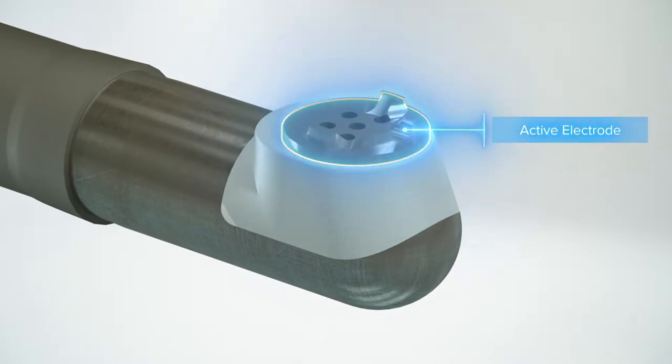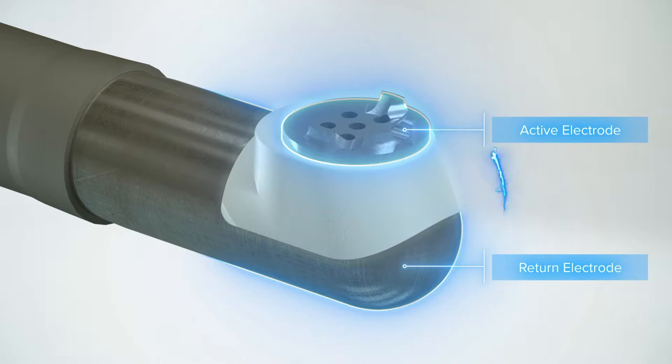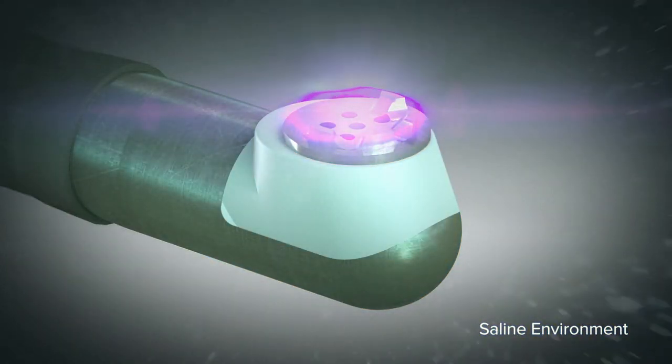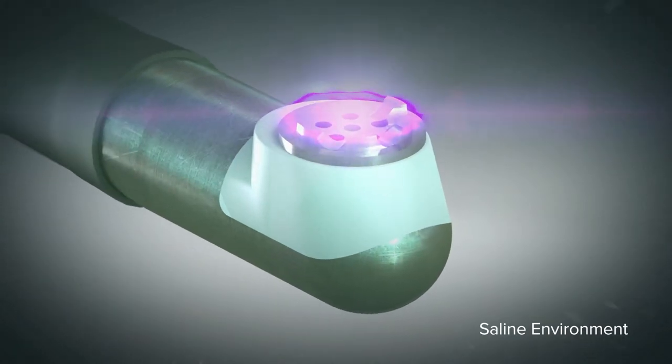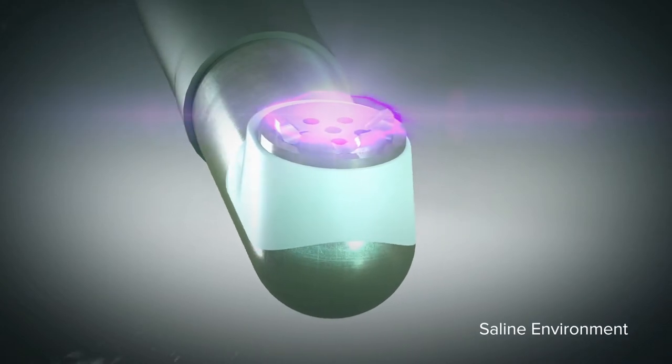The system operates at a specified radio frequency and generates an electrical field at the tip of the device. Electrical energy flows through saline, creating a chemical reaction that generates a high-density energy field at the tip of the probe. The ultra-thin plasma layer contains energized particles that have sufficient energy to break organic molecular bonds.